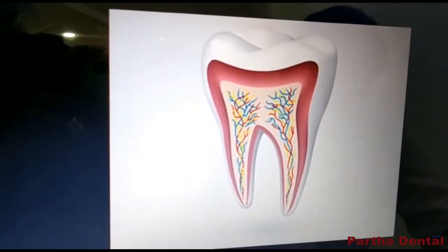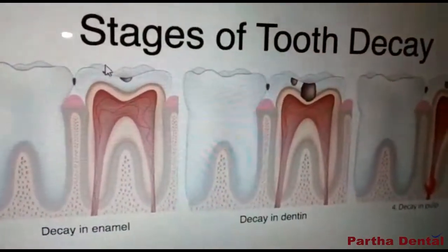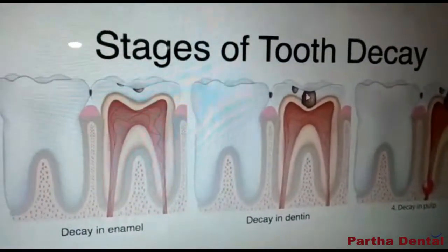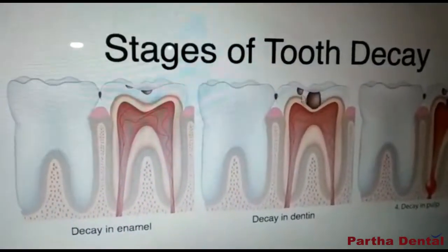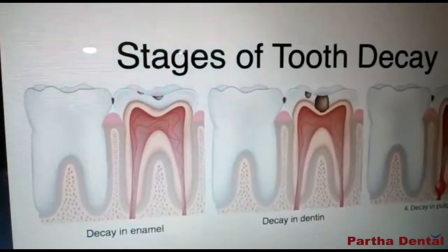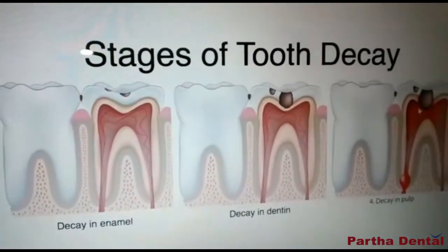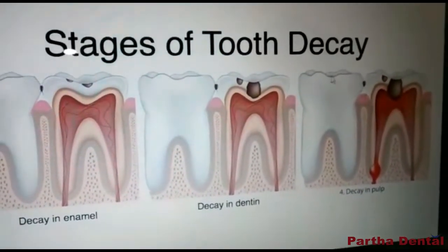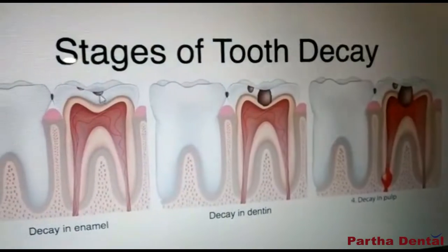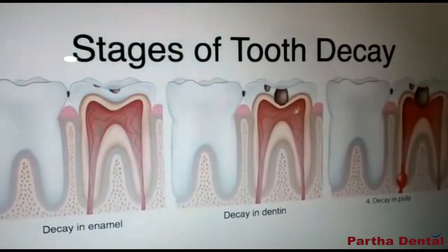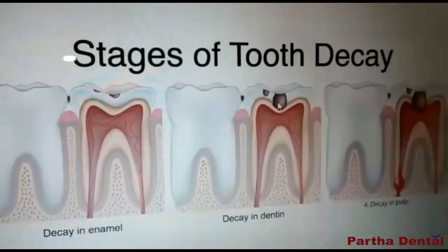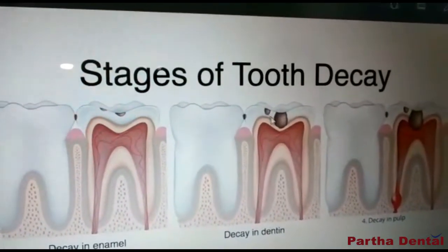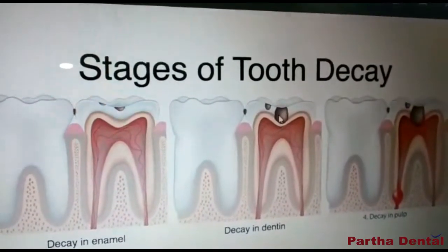When a decay or cavity occurs, first it occurs on the enamel layer, and when it is not treated, it will spread into the dentin layer. At the last stage, it will get into the centermost region where your blood vessels and nerves are present. When the cavity or tooth decay is present in the enamel and dentin, we can do a simple filling — a tooth-colored restoration — so that the decay doesn't progress any further.